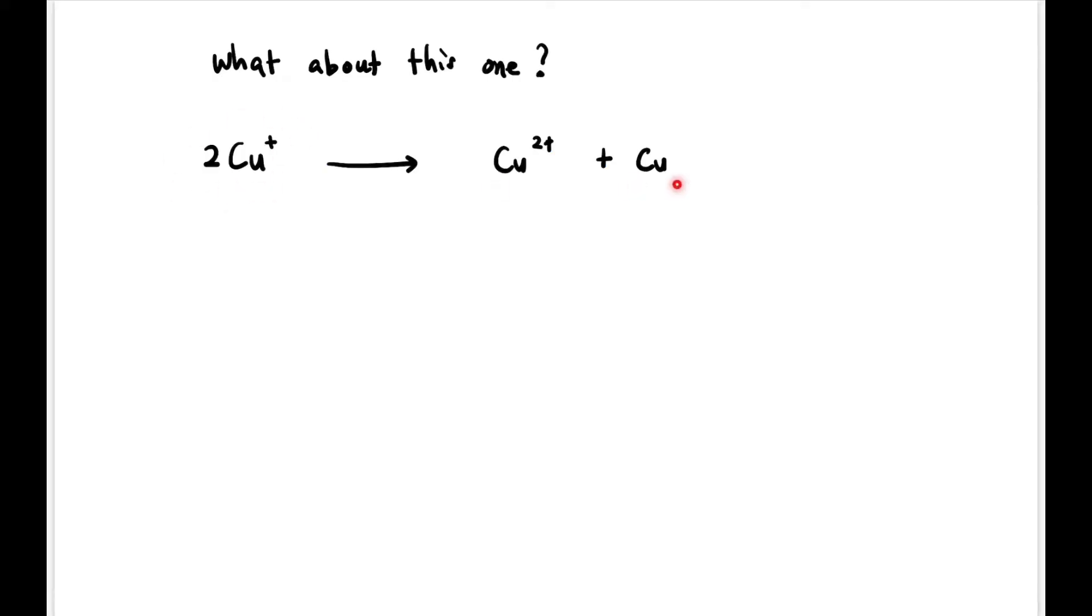Now what about this equation? We have 2Cu⁺ produce Cu²⁺ + Cu with no charge. We list down all the oxidation numbers below there. If we consider from Cu⁺ become Cu²⁺, the oxidation number increases. While from Cu⁺ to Cu, oxidation number decreases.